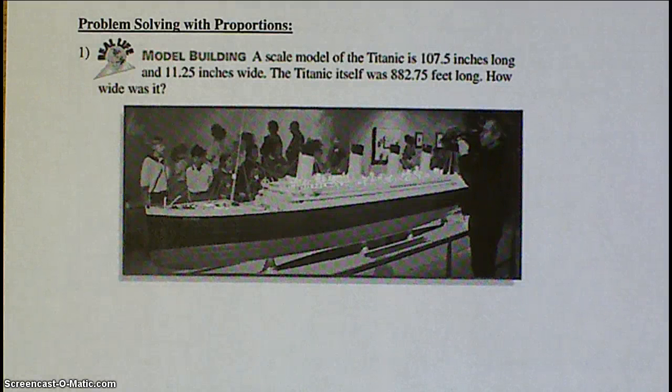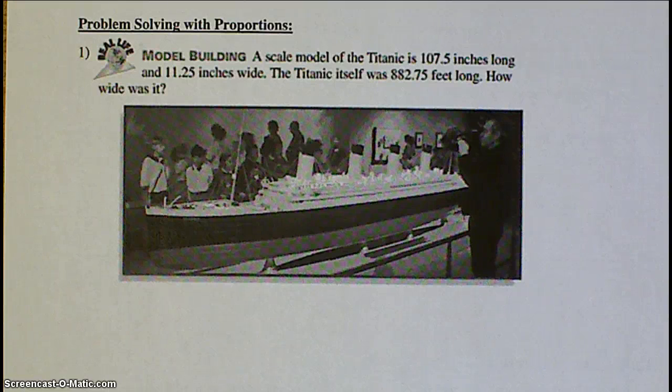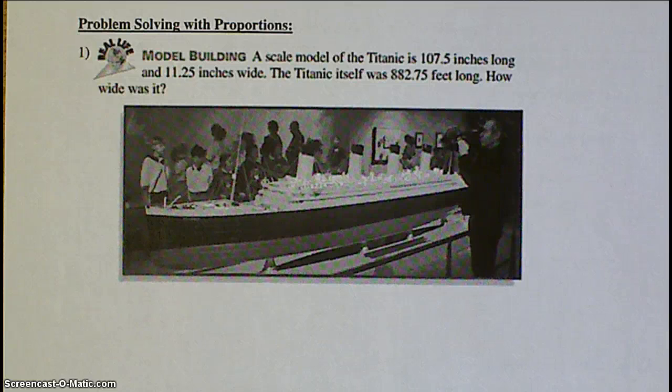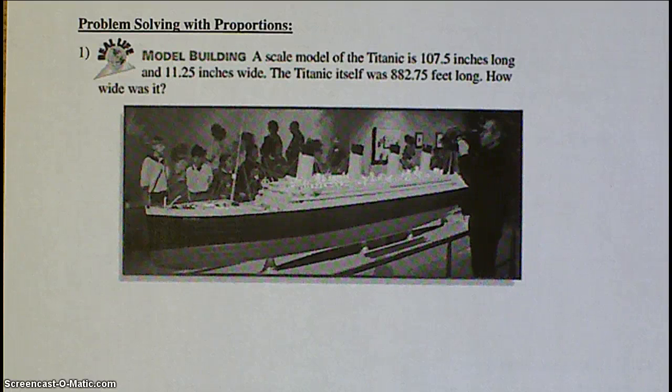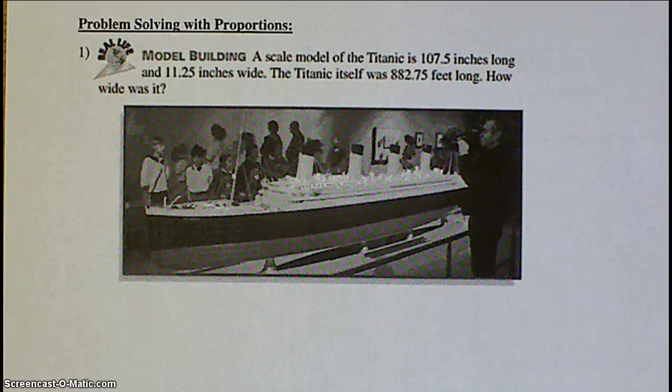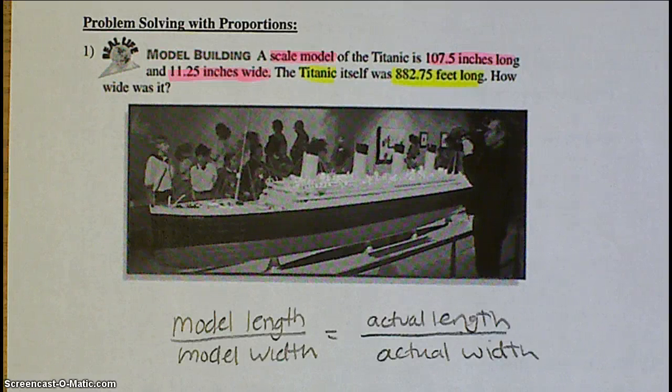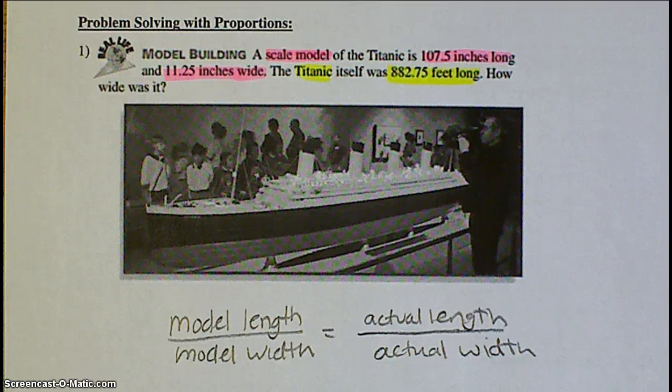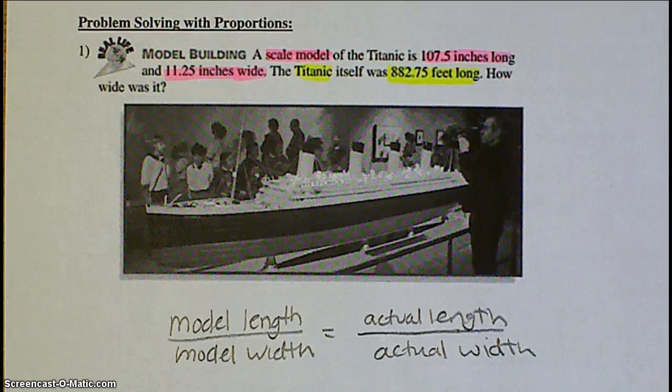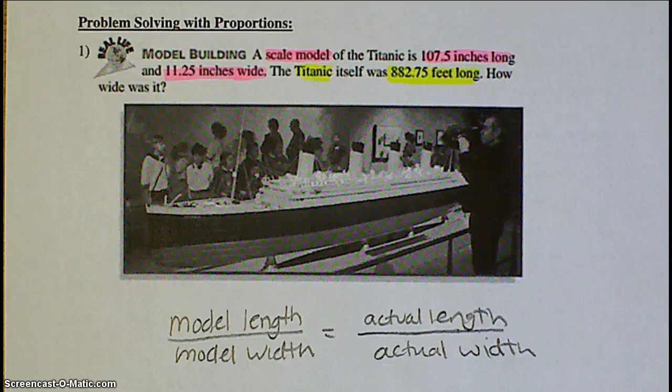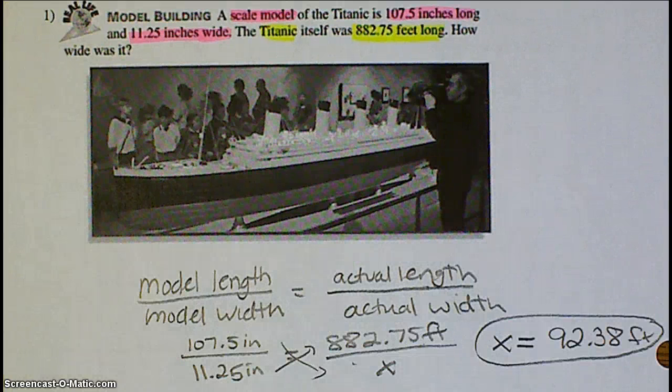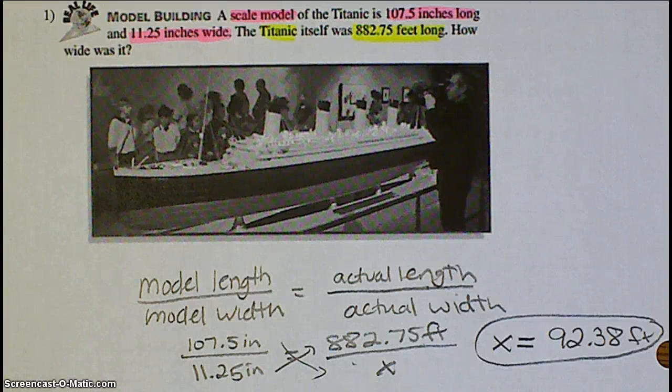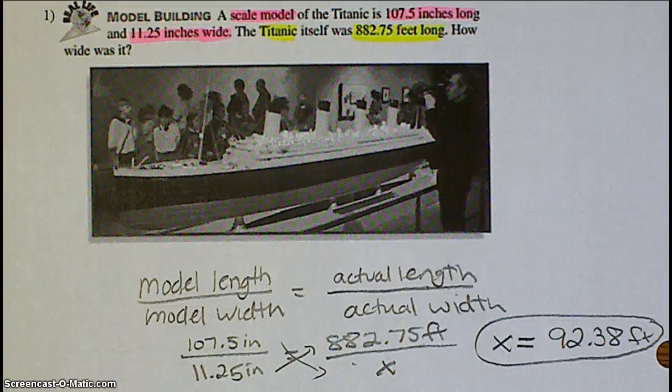This problem is about a model of the Titanic. So, it gives you some information about the measurements for the scale model and it also tells you how long the actual Titanic was. The question is, how wide was the actual Titanic? So, you're going to have to read through, find your units, write out a verbal model, anything that you can do to help yourself make out a proportion so that you can figure out this problem. Some other strategies that you could use: Colors are great. You can go through and highlight all the things that go with the scale model, highlight the ones that go with the actual Titanic. And now, once you have your verbal model set up, it's pretty easy to go ahead and plug in your numbers and solve for that width. So, after you plug in your numbers to that verbal model, if you did create that and then you do your cross products, you should end up with 92.38 feet.